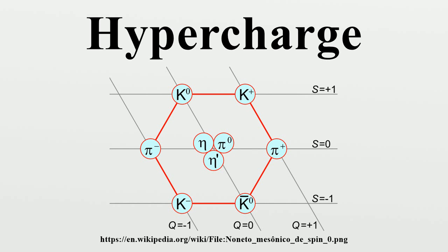For a strange quark, with charge minus one-third, a baryon number of one-third and strangeness of minus one, we get a hypercharge Y equals minus two-thirds.